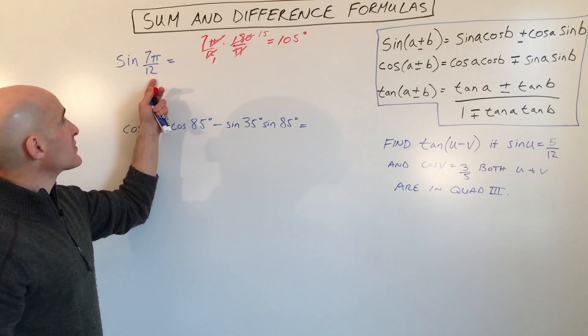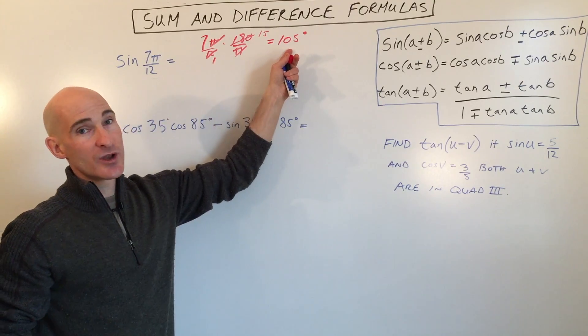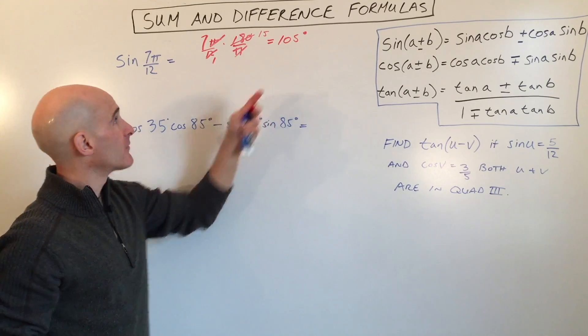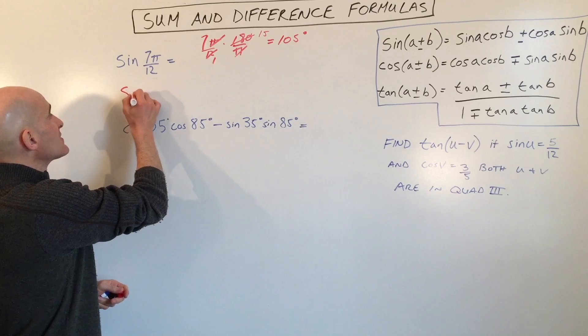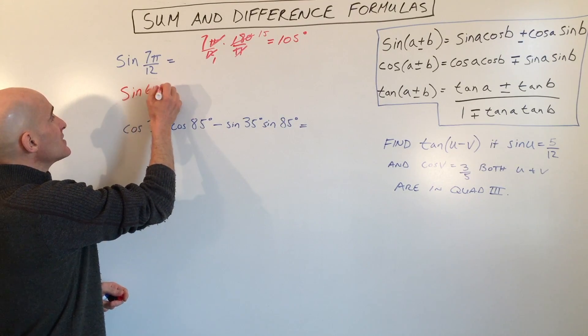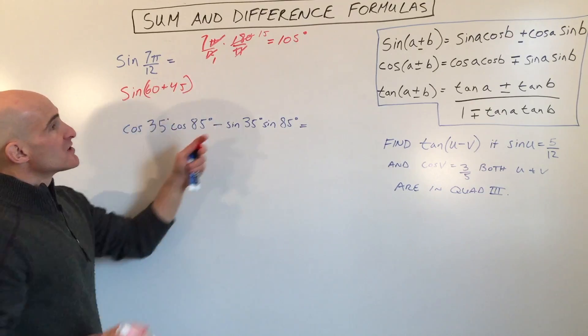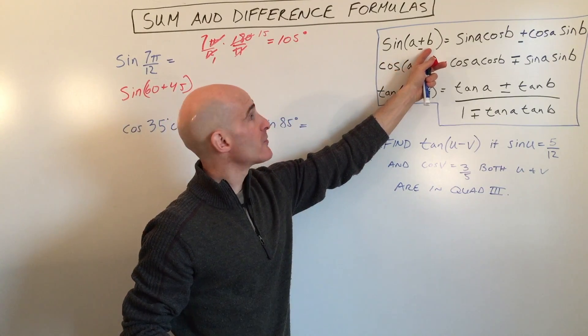So now we just have to ask ourselves, what two angles that we know on the unit circle add up to 105? So that would be like 60 and 45. So what we're going to do is we're going to write this as sine of 60 plus 45. So you can see in our formula here, A is 60 and B is 45.